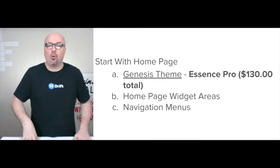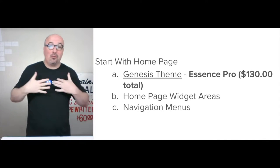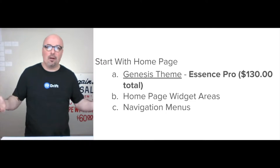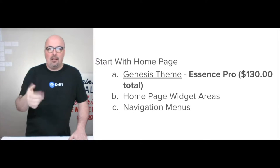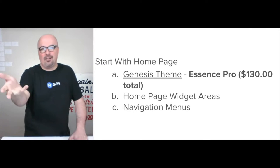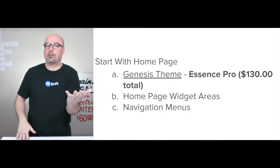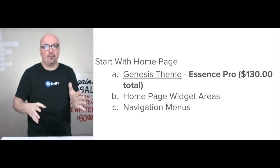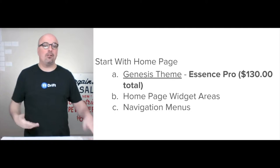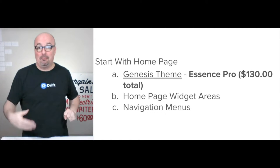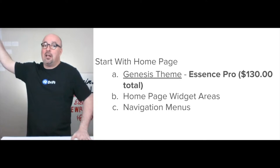I start with the homepage when putting together your website — basically the front lobby, where people walk into the offline version. That's how I've demystified website building over the years: just start with the homepage. I use the Essence Pro theme, a Genesis child theme from studiopress.com — $130 total. That lets me focus on getting the homepage messages right through widget areas, then add a menu at the top and bottom, populate those pages, and you have a website you can build onto over time.